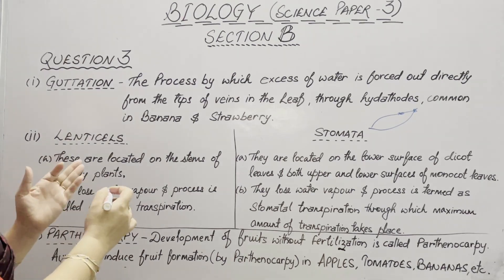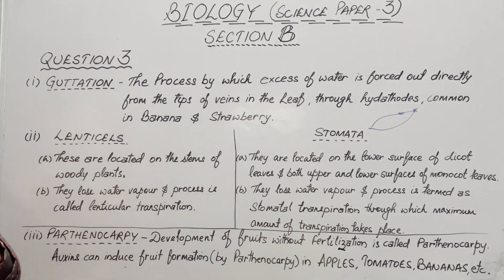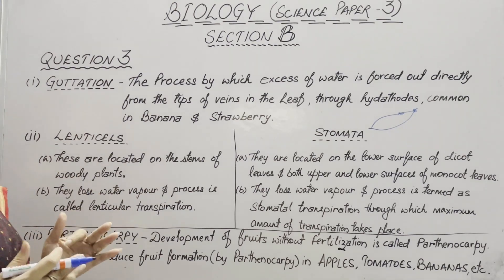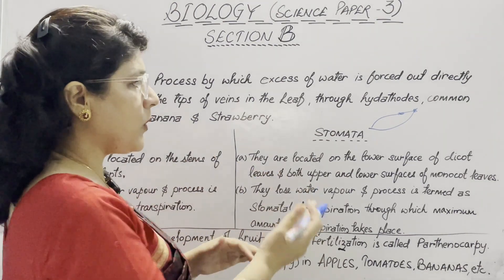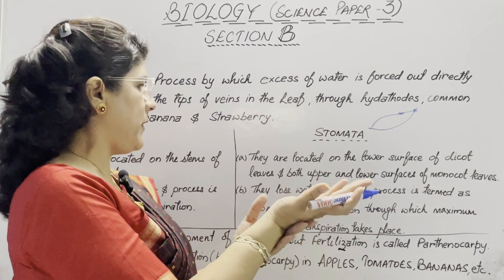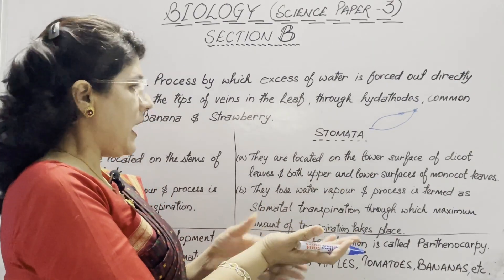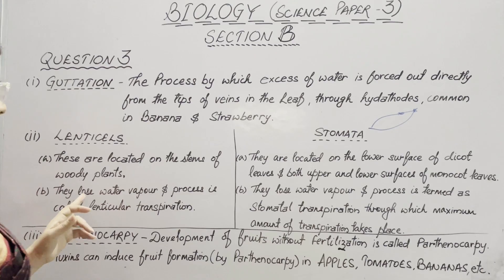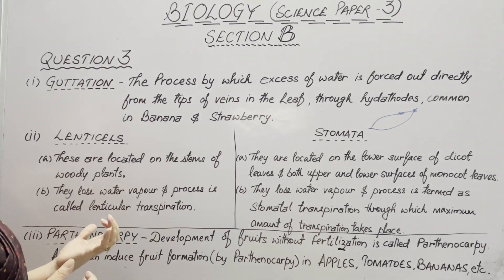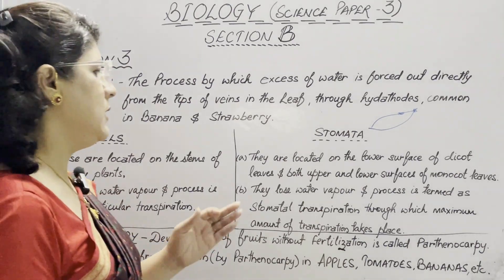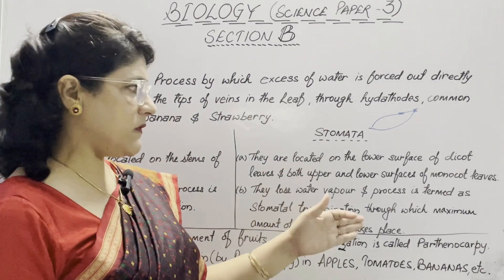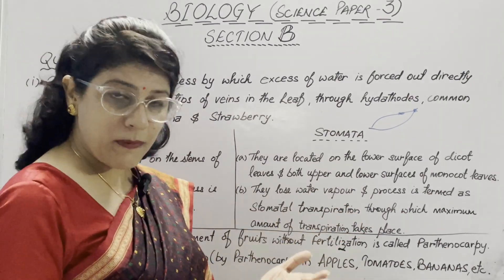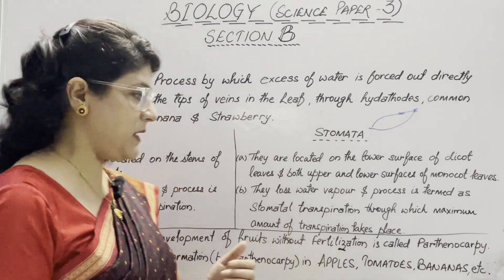In the second part, give one difference between lenticels and stomata. Lenticels are located on the stems of woody plants. Stomata are located on the lower surface of a dicot leaf and both upper and lower surface of a monocot leaf. They lose water vapour and the process is called lenticular transpiration and stomatal transpiration respectively, through which the maximum amount of transpiration takes place.